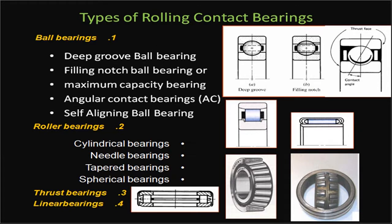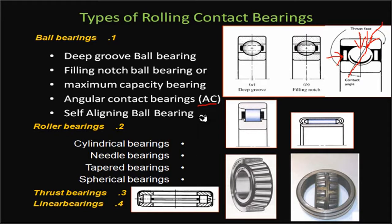The third type is the angular contact bearing, which can take radial load as well as some axial load because the contact is along a particular angle. This inclined contact means both a radial force component and an axial force component are carried. The fourth type is the self-aligning ball bearing, used when some misalignment in shaft rotation needs to be permitted, so the machine works properly even with minor misalignment.